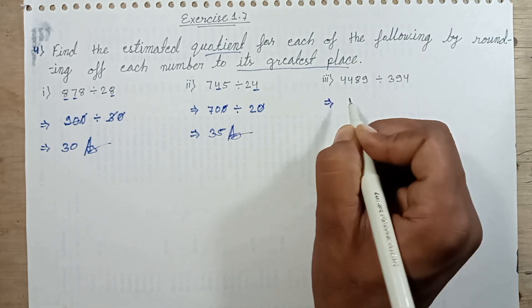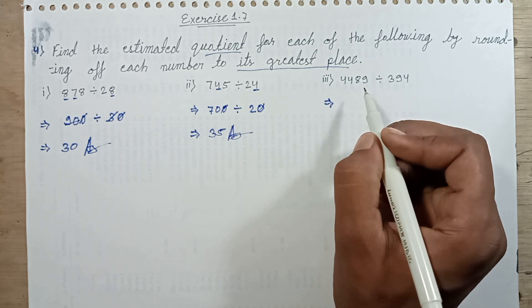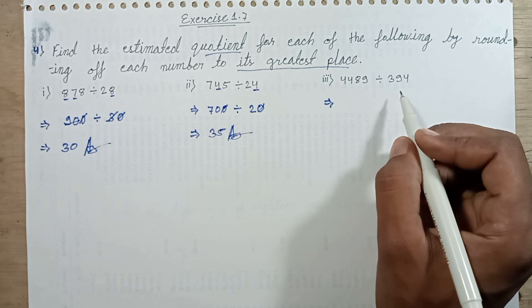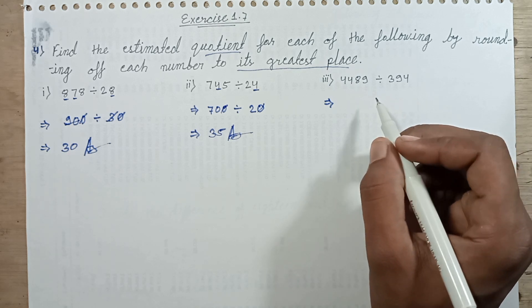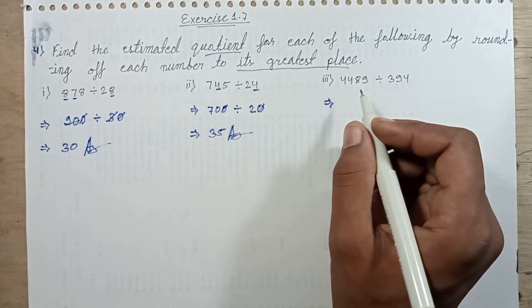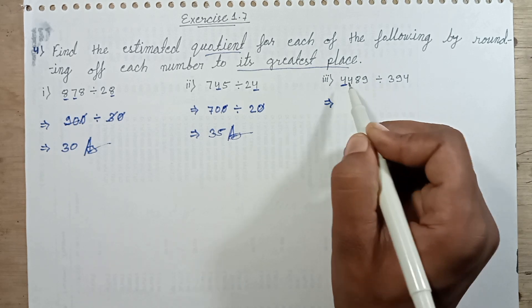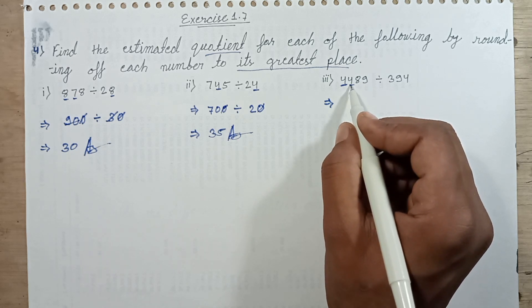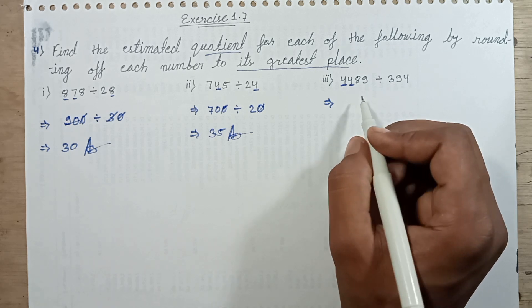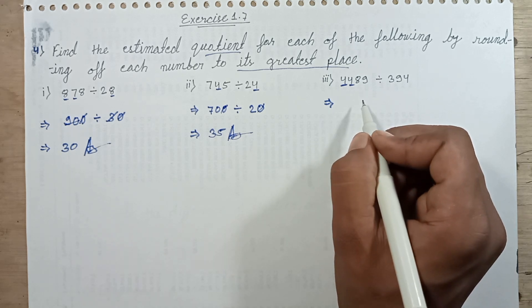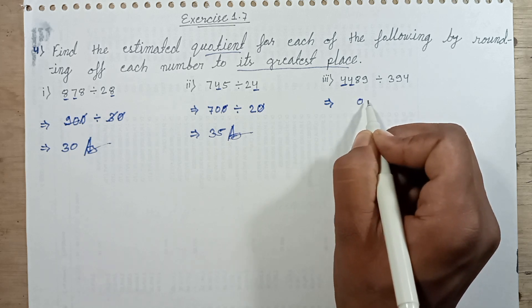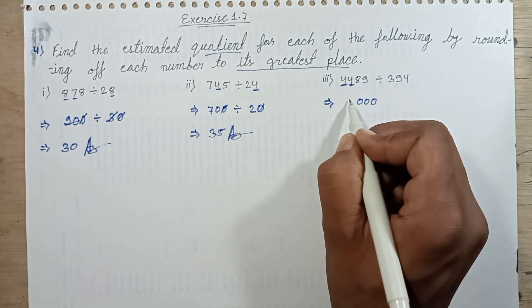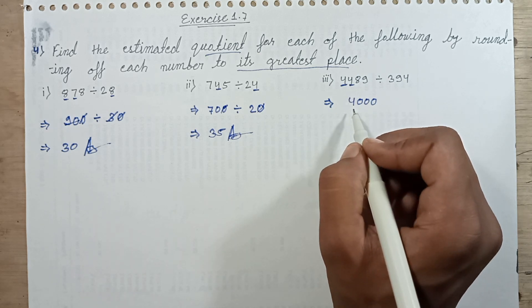Question number 3 is 4,489 divided by 394. Rounding of 4,489 — the greatest place is 4,000. The hundreds place digit is 4, and 4 is less than 5. Replace with 0. The tens place digit is replaced with 0. The ones place digit is replaced with 0. Same digit 4 is put in its place.